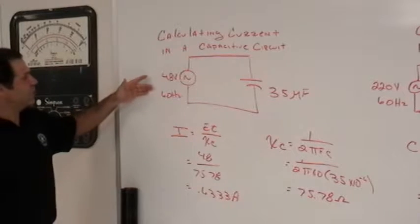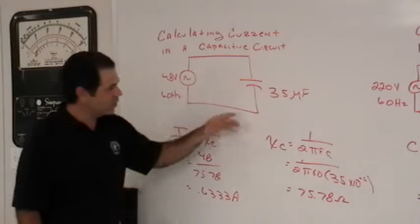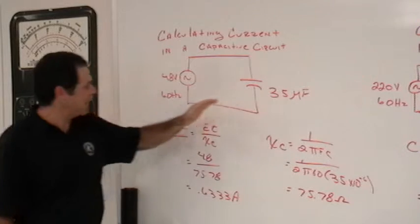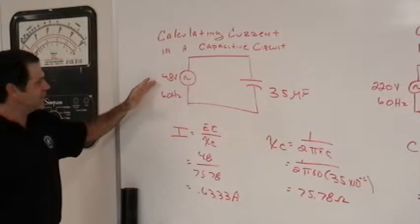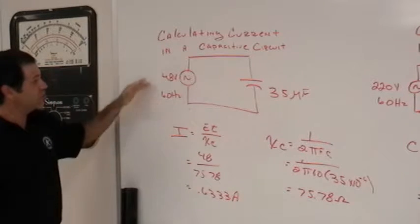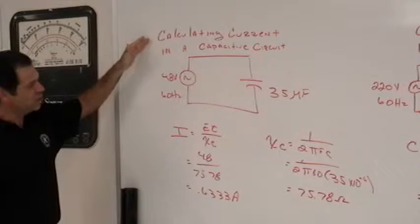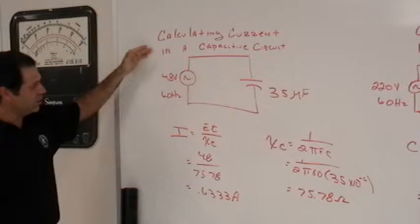In this circuit we have a series circuit with a 35 microfarad capacitor, 48 volts being applied to it at 60 hertz. And we're going to calculate the current in this capacitive circuit.